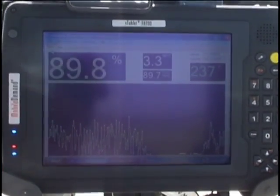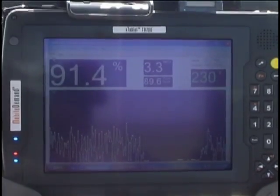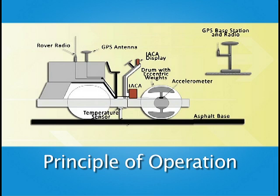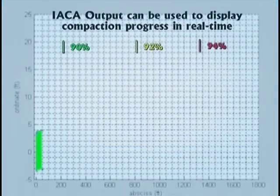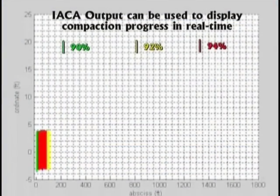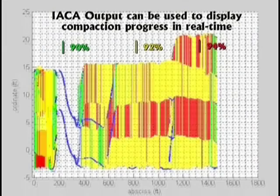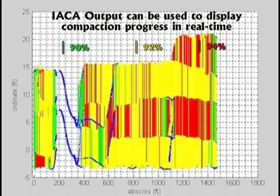the IACA analyzes the pavement's response from the roller vibrations in real time, estimating pavement compaction while the pavement is still pliable in order to address issues relating to compaction. Density information from the final pass of the roller is used to compile the density of the pavement, and the color-coded map display is easy to read, enabling roller operators to view the information on the monitor and determine when adequate compaction is achieved.